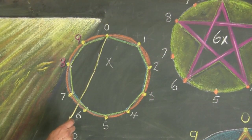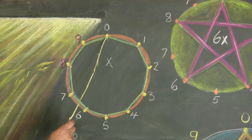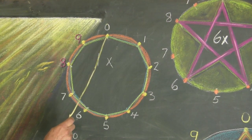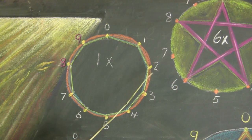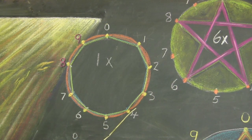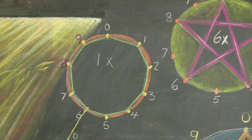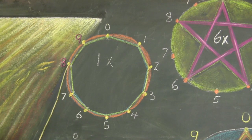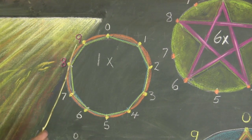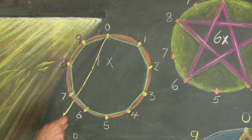This circle will show us the one times table. So we start here: zero times one is zero, one times one is one, two times one is two, three times one is three, four times one is four, five times one is five, six times one is six, seven times one is seven, eight times one is eight, nine times one is nine, and ten times one is ten.